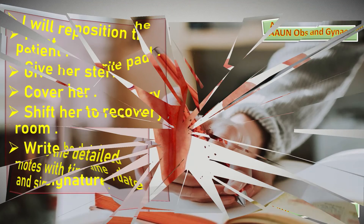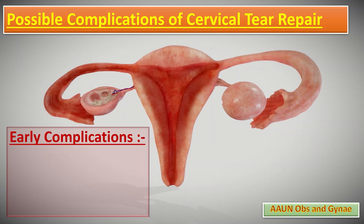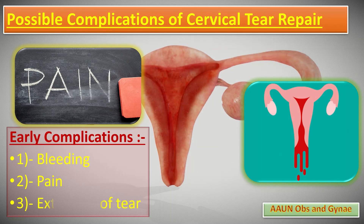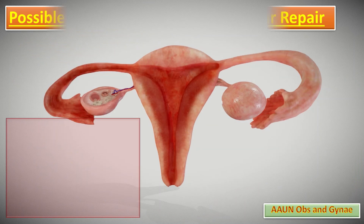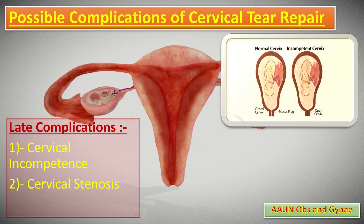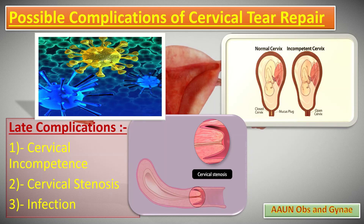Now let us talk about the possible complications of cervical tear repair. We may have early or late complications. The early complications include bleeding, pain, or extension of the tear. The late complications include cervical incompetence, cervical stenosis, or the patient may develop infection later on.